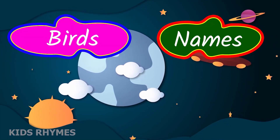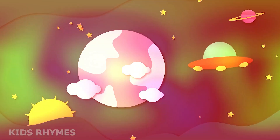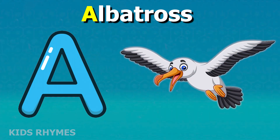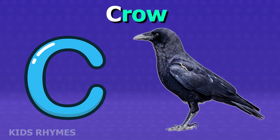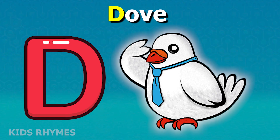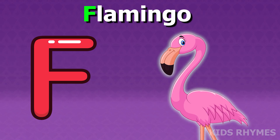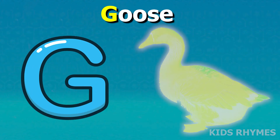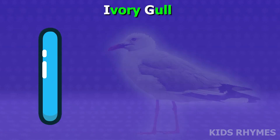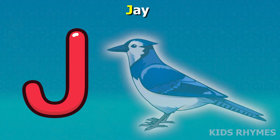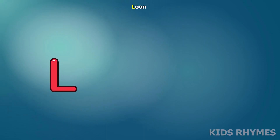Bird's name according to alphabet: A for albatross, B for blue jay, C for crow, D for dove, E for eagle, F for flamingo, G for goose, H for hen, I for ibis, J for jay, K for kingfisher, L for loon.